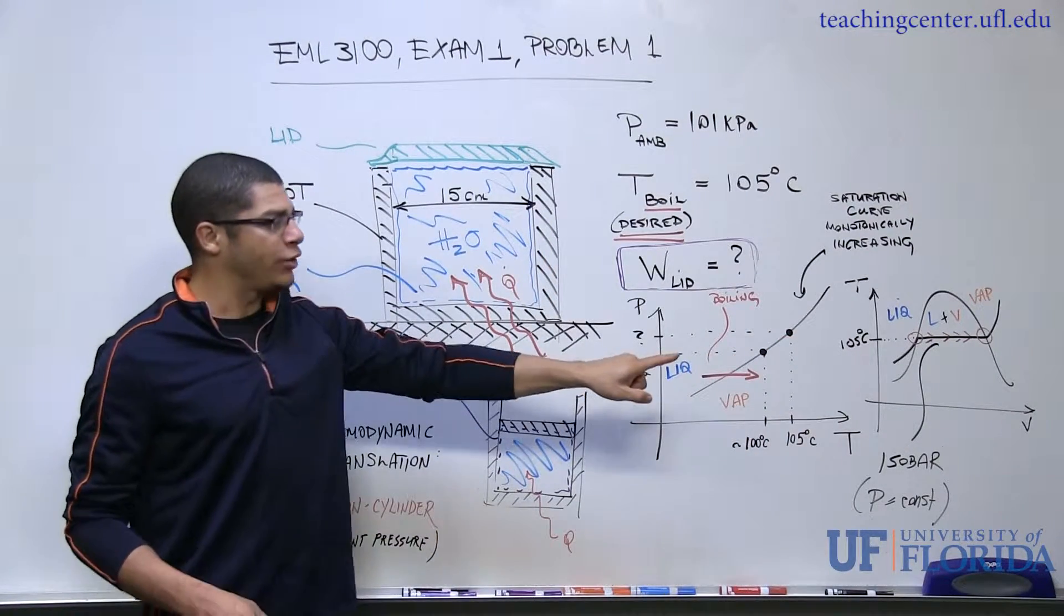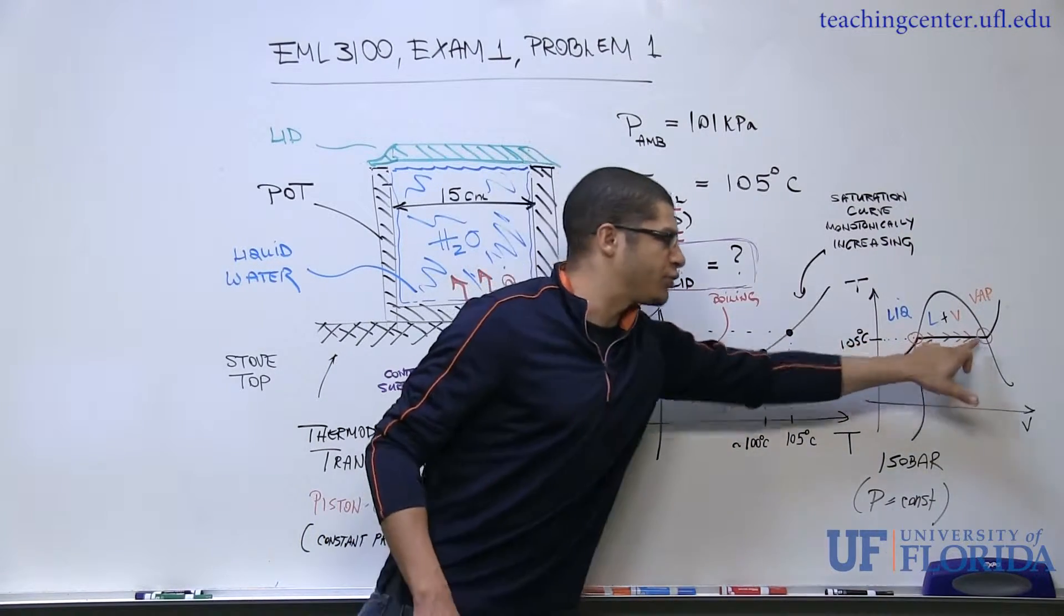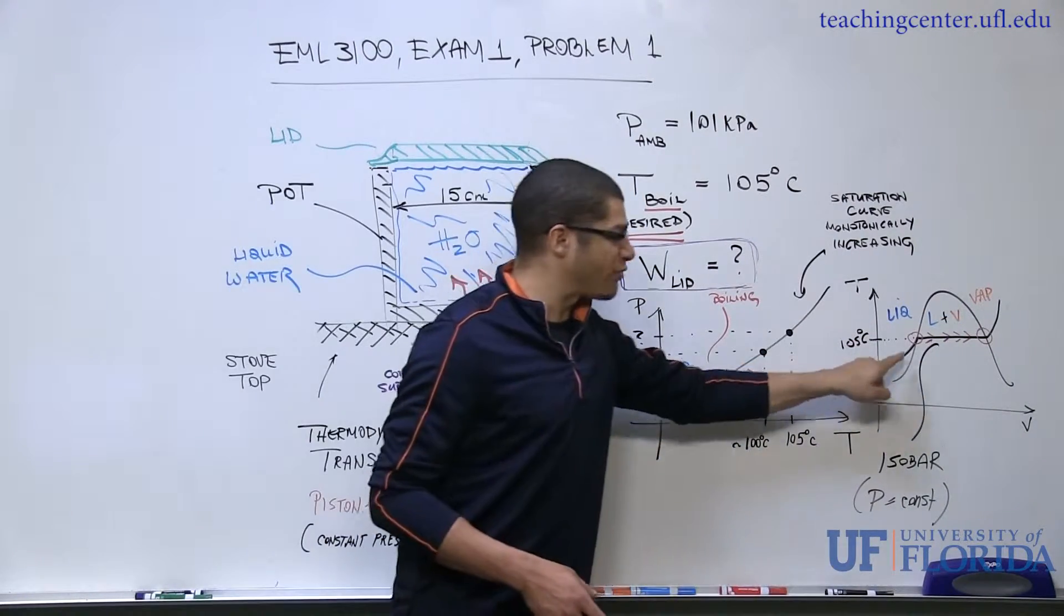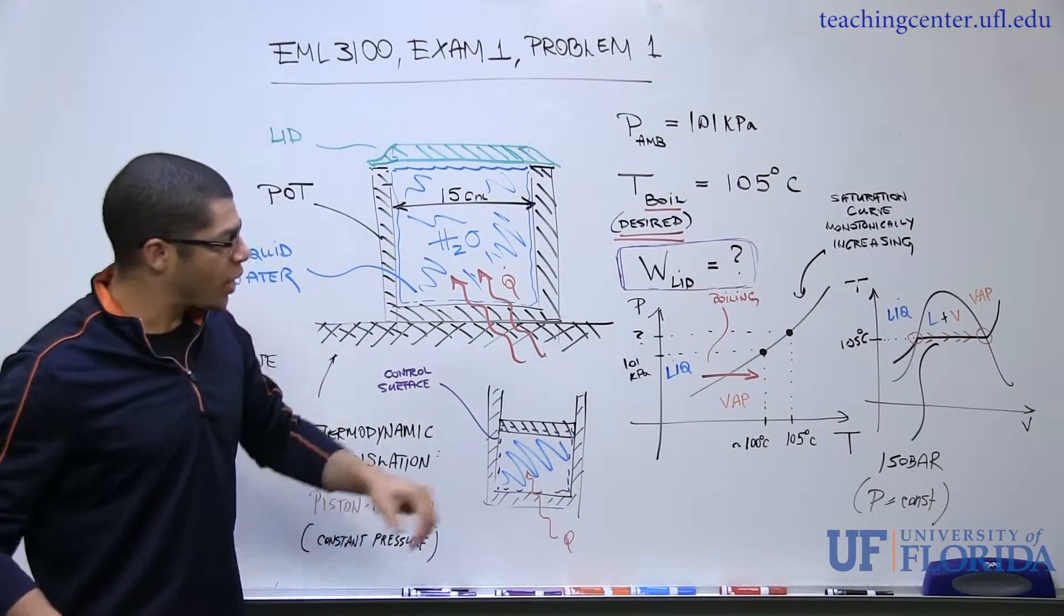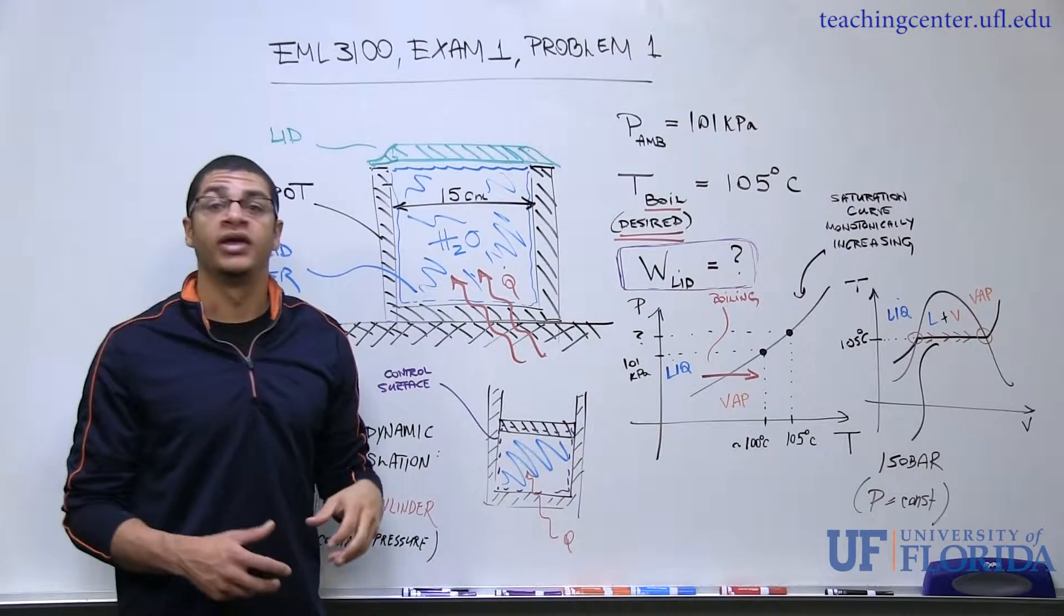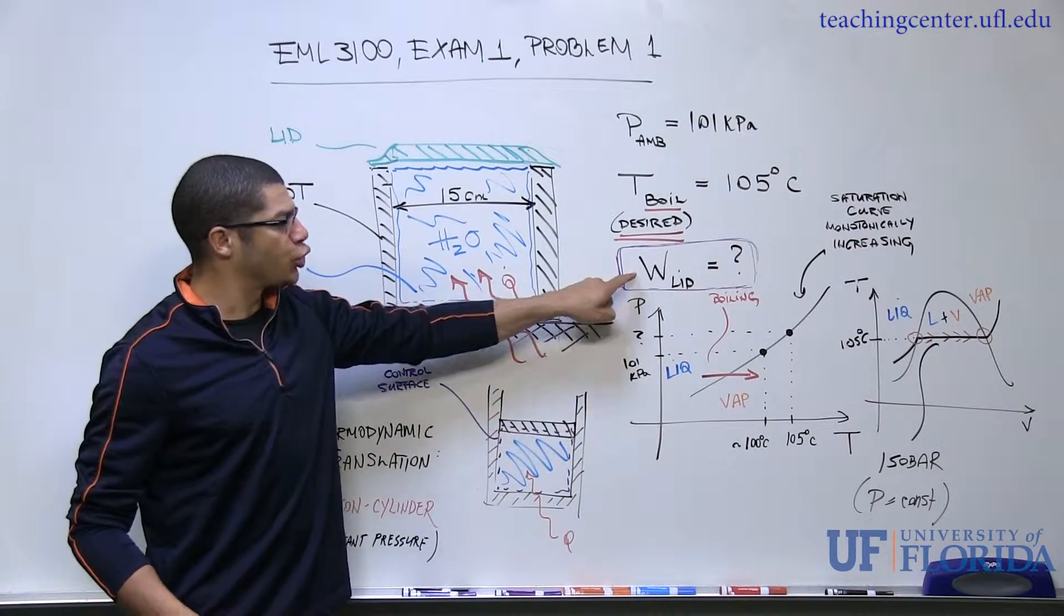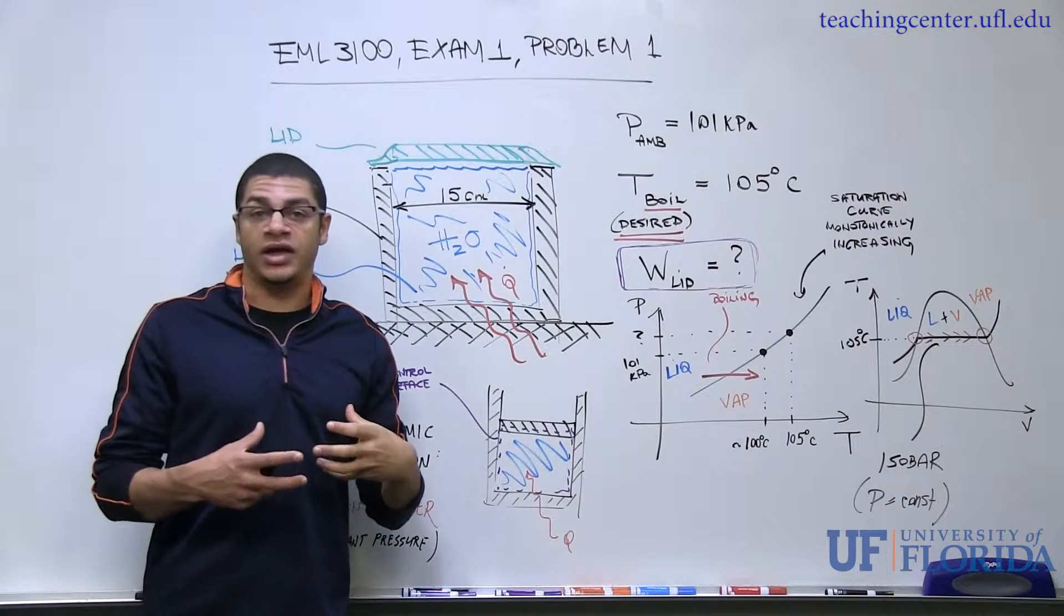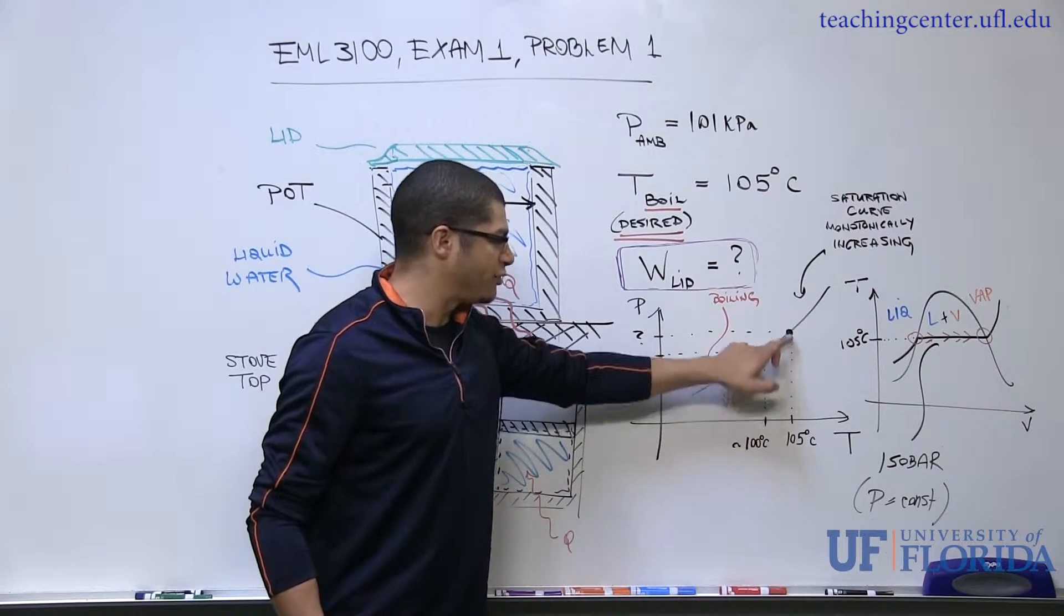And again in the TV diagram, if we're operating at 105 degrees centigrade for our saturation temperature, there's going to be a pressure corresponding to that. If I were to travel along that pressure curve, I would begin to boil at 105 degrees centigrade rather than the approximately 100 degrees centigrade that's associated with atmospheric pressure. So before we can really begin to determine what the required weight of the lid is to reach a given pressure, we need to figure out what that given pressure is that's associated with 105 degrees centigrade.